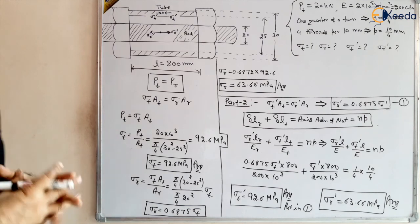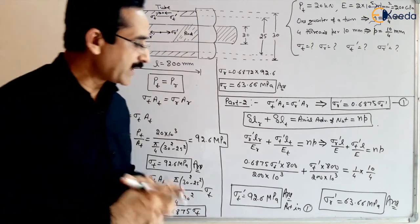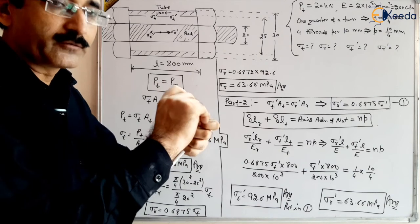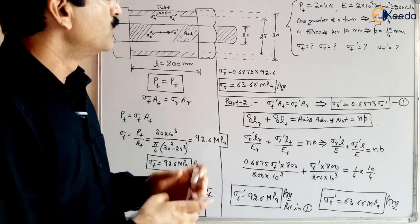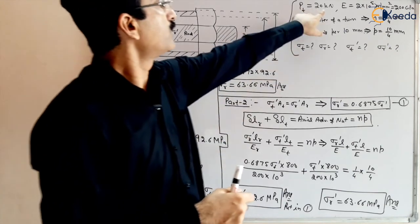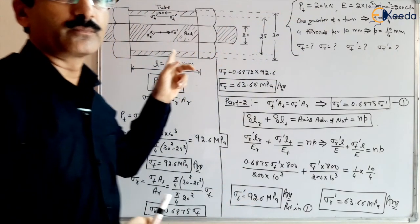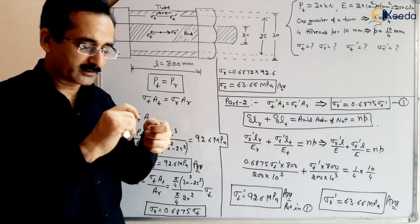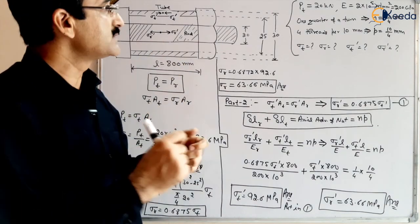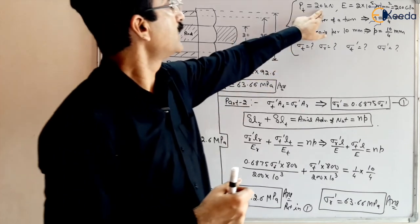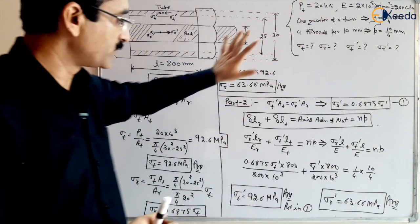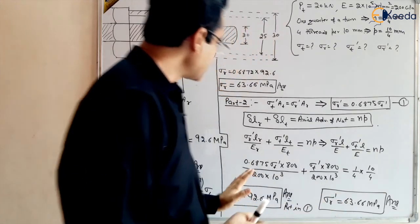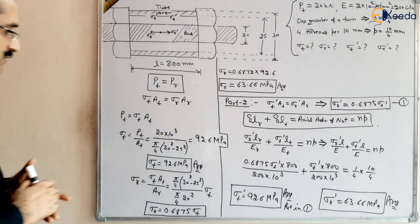This result means that one quarter of a turn tightening of the nut is equivalent to a 20 kN load applied in the tube. That is why we are getting the same answer as the previous part of this question.